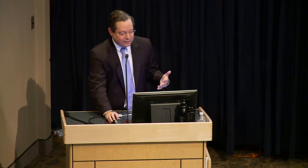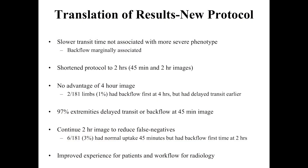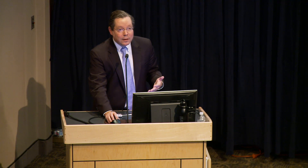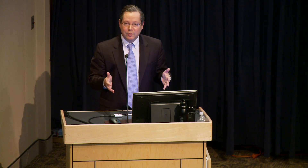Based on this data, we translated findings to our protocol. Since transit time is not related to severity and backflow only marginally so, there's really no reason to get a four-hour image. We shortened our protocol to 45-minute and two-hour images. Only 2 out of 181 limbs first showed backflow at four hours, and those patients had delayed transit earlier, so we would have detected the abnormality sooner. In fact, 97% of extremities could be assessed as normal or abnormal at just 45 minutes. We still get the two-hour image to reduce the false-negative rate — which would be about 3% if stopping at 45 minutes — as six patients had normal uptake at 45 minutes but showed dermal backflow at two hours for the first time.